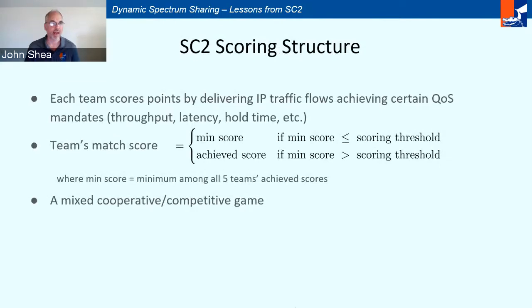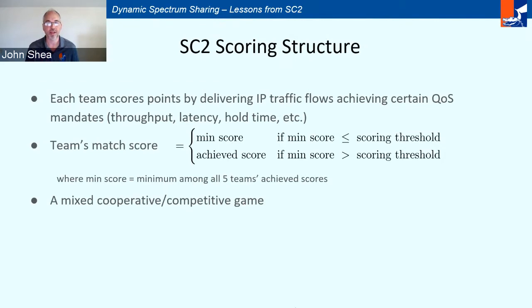Each team's score depended on their success in delivering a variety of IP traffic, but scores also depended on the performance of the other teams through a scoring equation that creates a mixed cooperative and competitive game. There's a threshold for each stage of a match — if any team falls below the threshold, then every team gets the minimum score among all teams, encouraging everyone to reach the threshold. That's the cooperative part. If every team reaches the threshold, then each team's score is their overall number of points scored. So it's a mixed competitive-cooperative game.